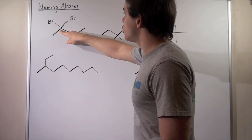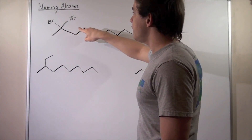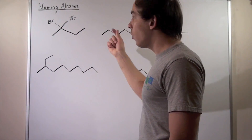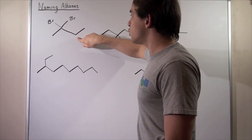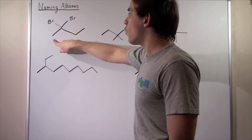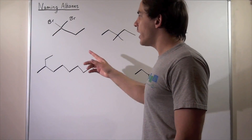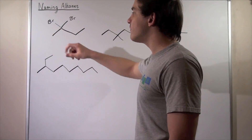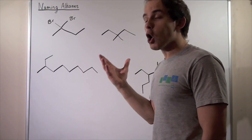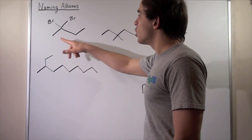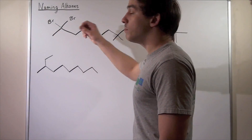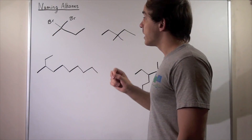Counting along the chain: one, two, three, four. Or we can also go one, two, three, four. Either way, we have a four-carbon backbone. So that means we're dealing with butane.